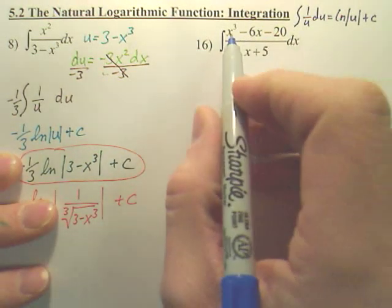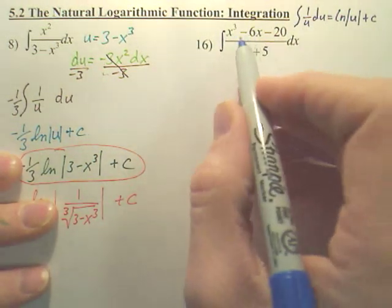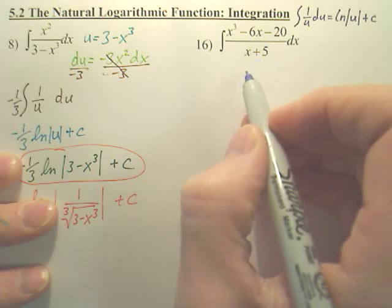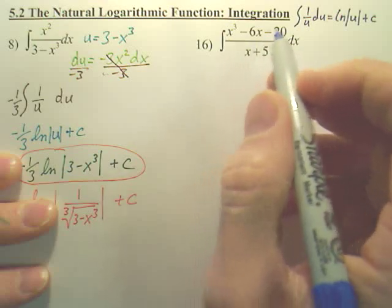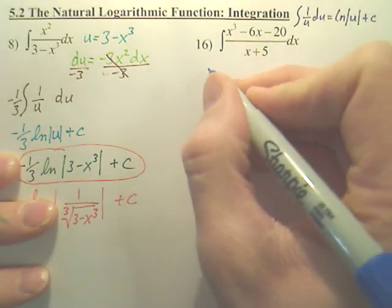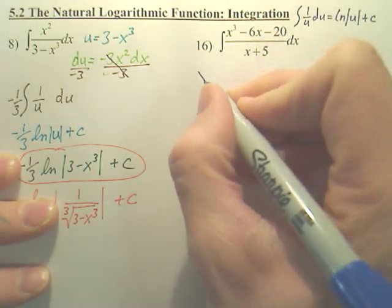Now, to integrate this one, this is a cubic. You can't factor and cancel. You can't divide everything by x plus 5. That won't help you. So there's a technique of long division which is actually useful. You might not like it, but it works.